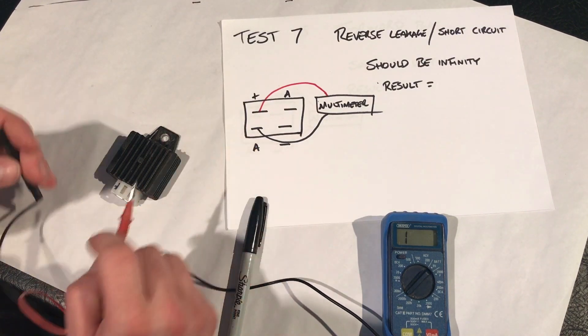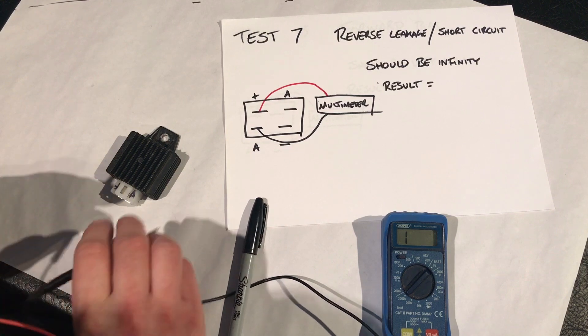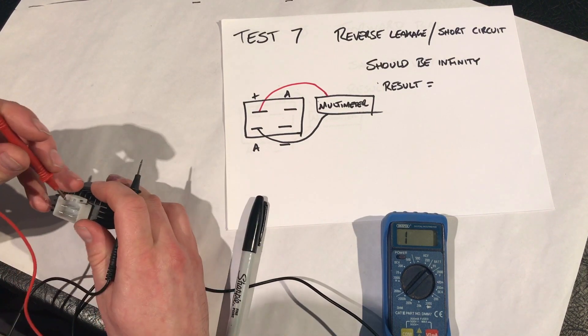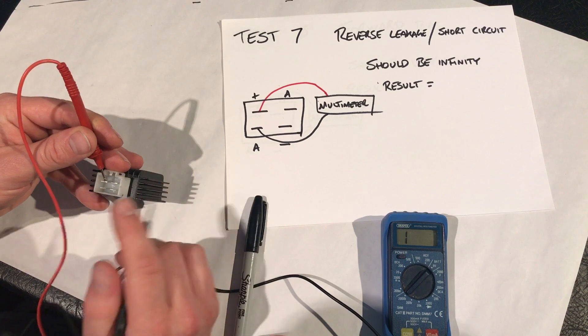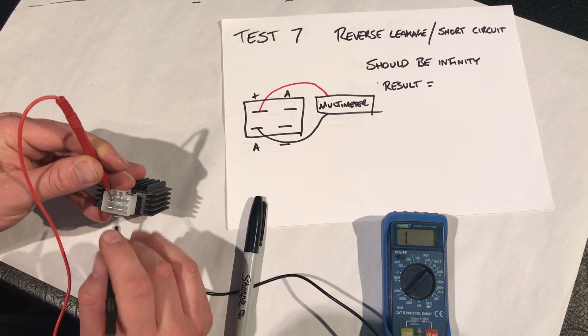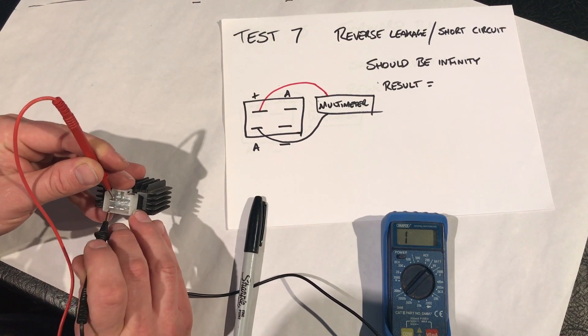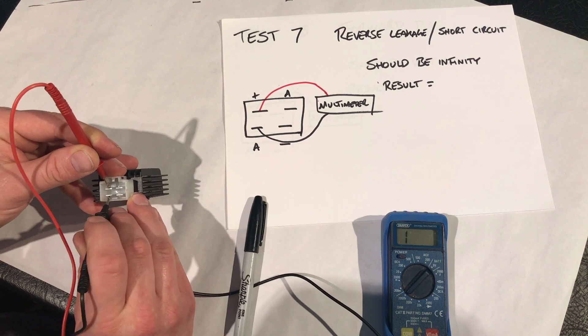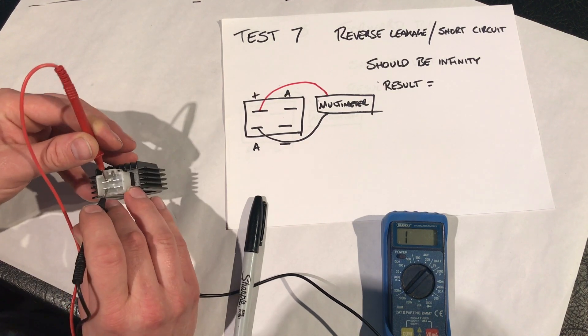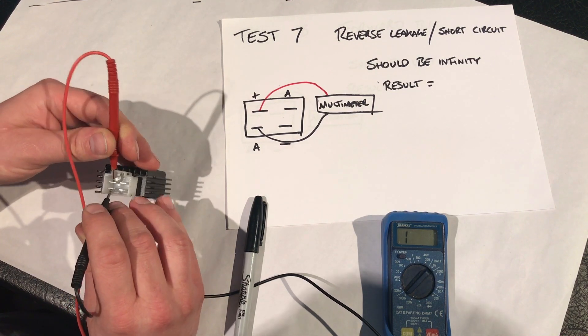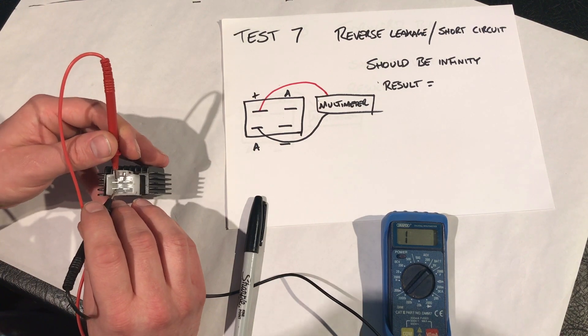Test seven. We're now moving around to the next diode. So multimeter positive to the battery positive, and then the bottom alternator connection that we had on this. So we should be showing infinity. And there we are, we're showing infinity. So that one is a pass.